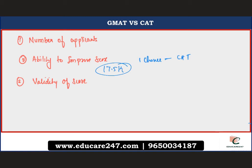Third, validity of scores — CAT scores are valid only for that particular year's admissions cycle. For example, if you take CAT in November 2020, the score is valid for 2021 admissions only. You cannot use it in subsequent years. GMAT scores, on the other hand, are valid for five years. So if you score well but want to join a B-school three or four years later, you can still use the same GMAT score.